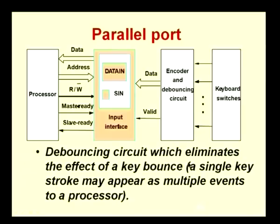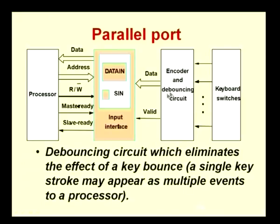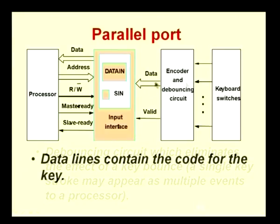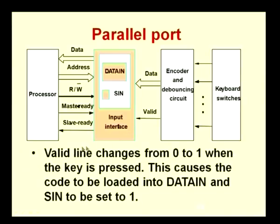There is also a debouncing circuit that eliminates the effect of key bounce. When a key is pressed, the mechanical contact may produce vibration, causing multiple contacts. The debouncing circuit ensures this is interpreted as a single keystroke rather than multiple keystrokes. The debounced output identifies the particular key pressed and sends it to the interface. The keyboard side of the interface has data lines carrying the key code and a valid line indicating whether a key has been pressed — whether valid data is available on those data lines.